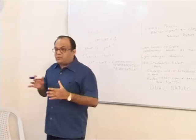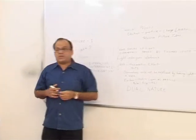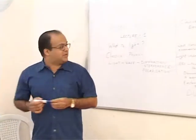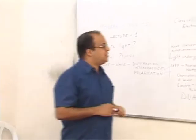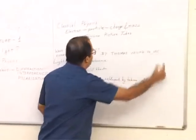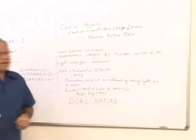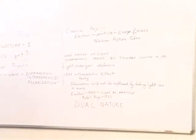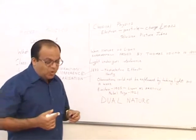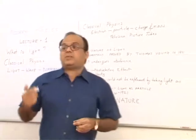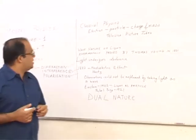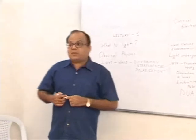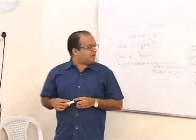The wave nature of light was experimentally proved by Thomas Young in 1801. He showed that light undergoes interference. Interference is a property exhibited by waves. Based on this, people started believing that light is a wave.